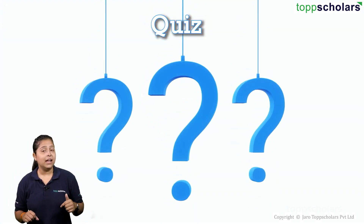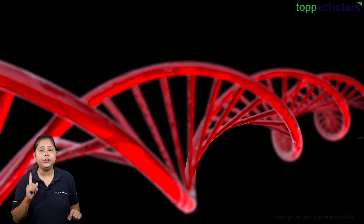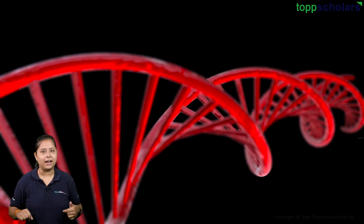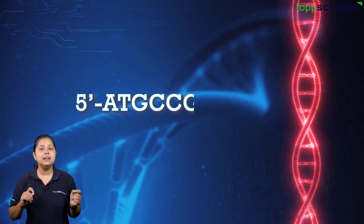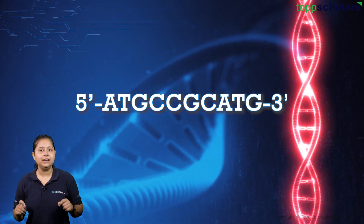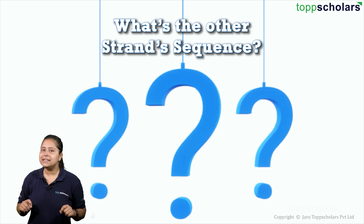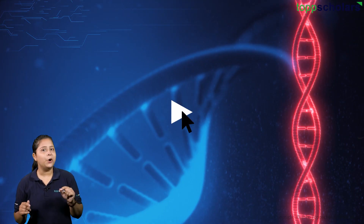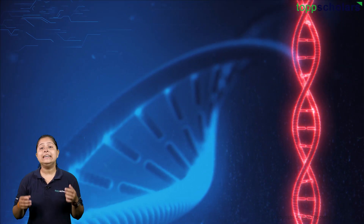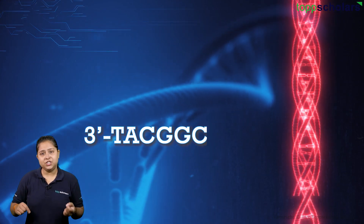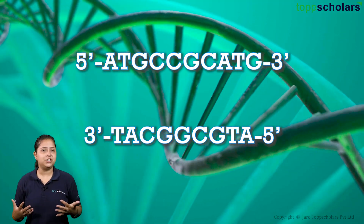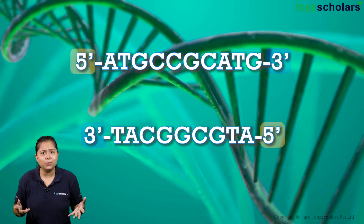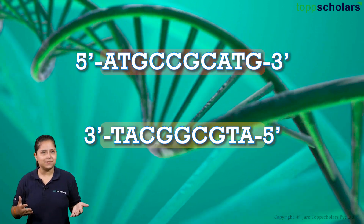Now let's have a quiz. I will give you a strand of DNA and you tell me the sequence of the other strand. The sequence is 5'-ATGCCGCATG-3'. What's the other strand's sequence? You may pause the video and write down your answer. The answer is 3'-TACGGCGTAC-5'. How did you get it? This is because of the anti-parallel nature of DNA and the AT and GC base pairing rules — easy, right?